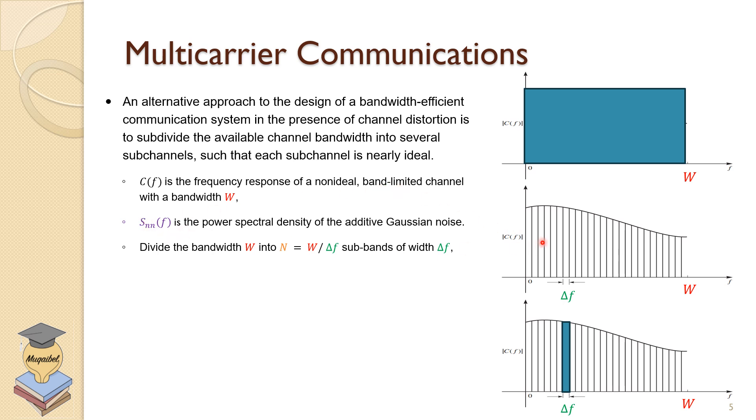You have also the phase response. So we also have a certain noise within this bandwidth. If it is white noise, then it's going to be flat and we're not showing it here. We need to divide this W, the bandwidth, into N different sub-channels. And those are given as delta F. The new bandwidth will be delta F.